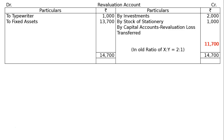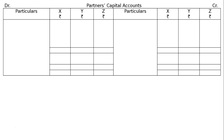By capital accounts: revaluation loss transferred in old ratio of X to Y, that is 2 to 1. X will be getting Rs 11,700 multiplied by 2 thirds, that is Rs 7,800. And Y will be getting 1 third, that is Rs 3,900. Then capital accounts of X, Y, Z — the first entry is opening balance of capital. After drawing the proper format, balance brought down for X is Rs 75,000, for Y Rs 62,000.